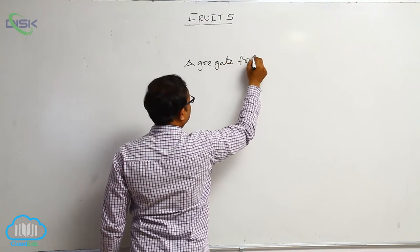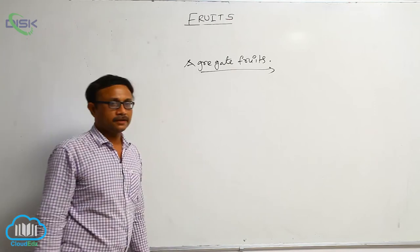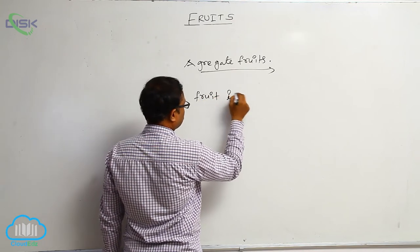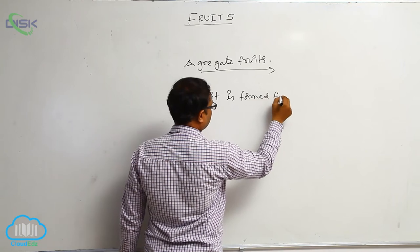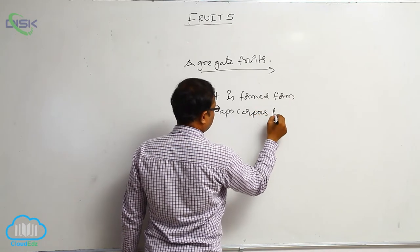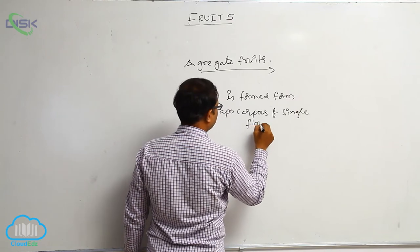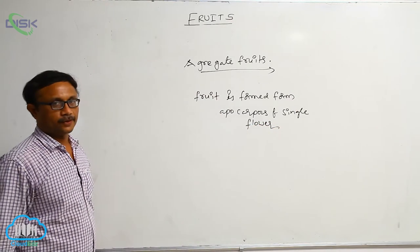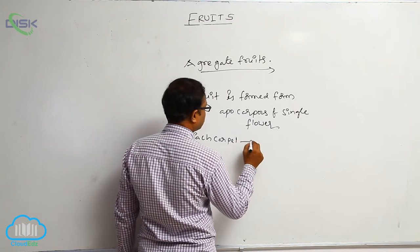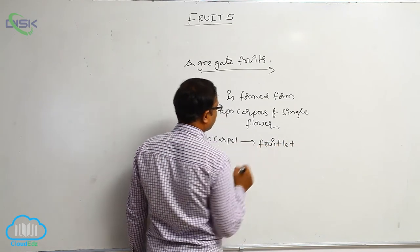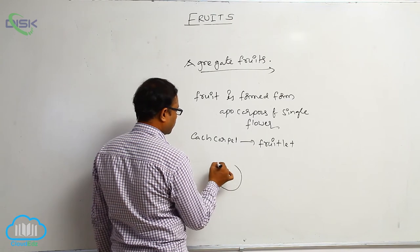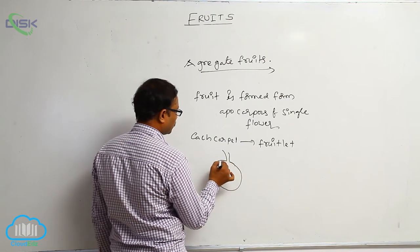Aggregate fruits means the fruit is formed from apocarpous of a single flower. Apocarpous of a single flower is known as aggregate fruit. In this, each carpel is known as fruitlets. All fruitlets are combined at the base of that pedestal to form a fruit, and that is known as the aggregate fruit.